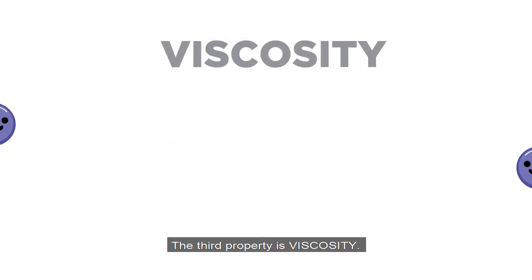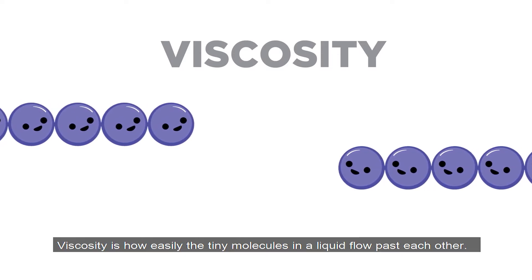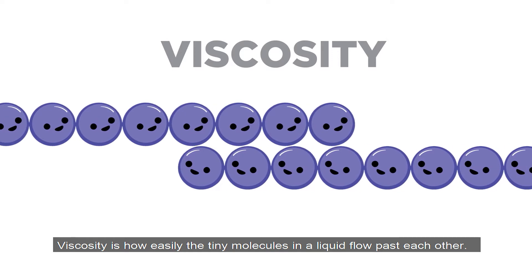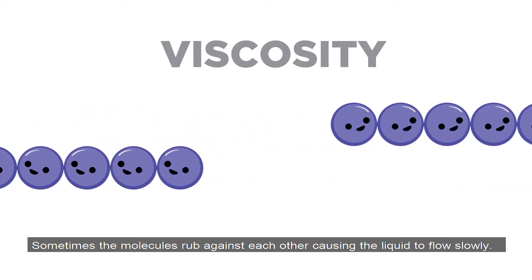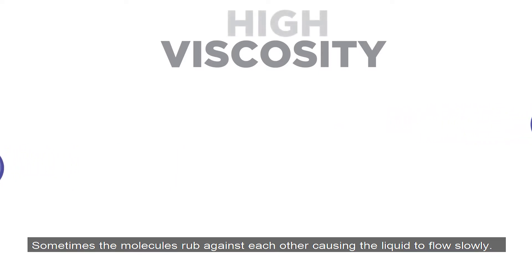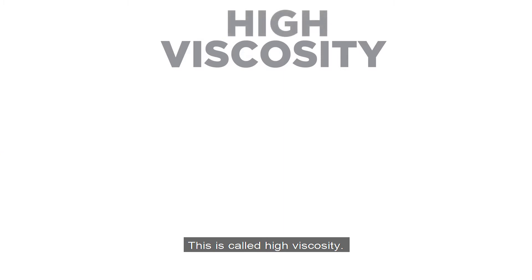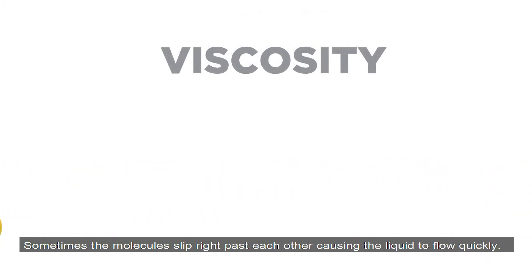The third property is viscosity. Viscosity is how easily the tiny molecules in a liquid flow past each other. Sometimes the molecules rub against each other, causing the liquid to flow slowly — this is called high viscosity. Sometimes the molecules slip right past each other, causing the liquid to flow quickly — this is called low viscosity.